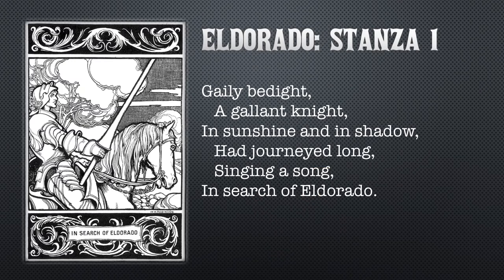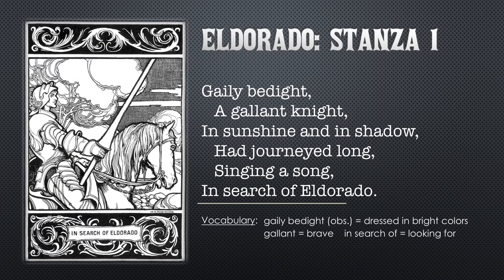The first step in understanding this poem is to understand what the words mean. The first verse is made up of two words: 'gaily bedight.' These words are obsolete — we don't use them anymore — but 'gaily bedight' means dressed in bright colors. 'Gallant' means brave. And the phrase 'in search of' means looking for. So a brave knight dressed in bright colors is looking for El Dorado.